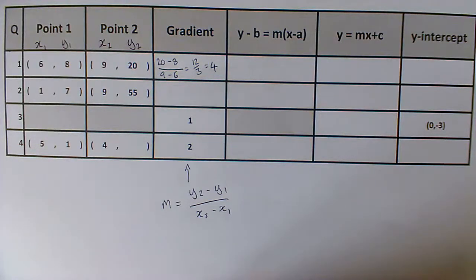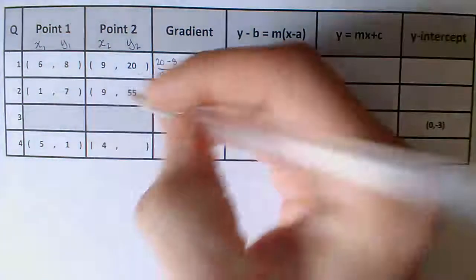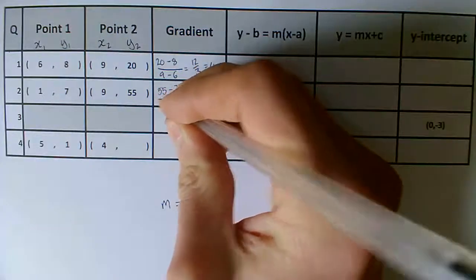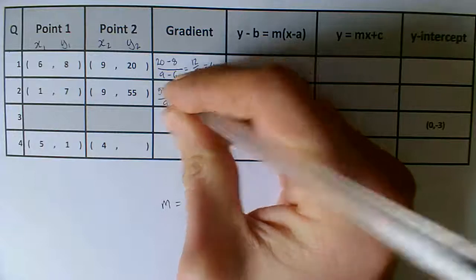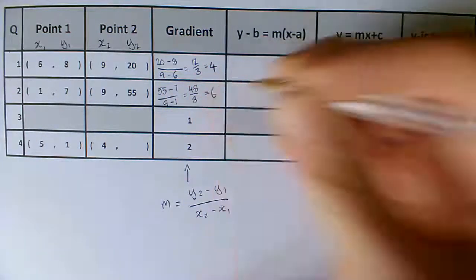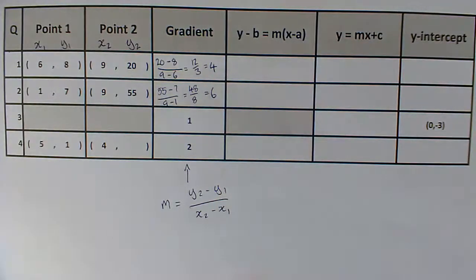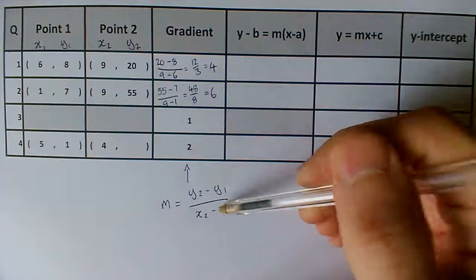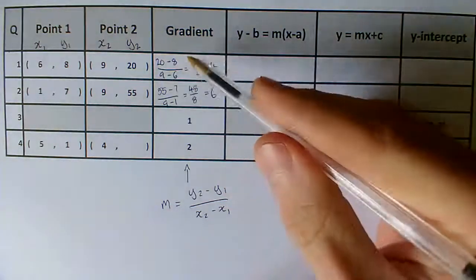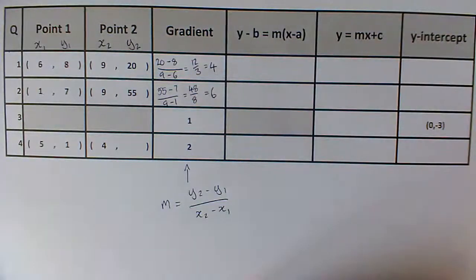Now, that process is what you need to do for each one. You do exactly the same here. 55 take away 7 over 9 take away 1. 55 take away 7 is 48 over 8, and so we get the answer 6. So, for most of the rows of the table that you have to fill in, we are following these nice steps of just putting our numbers in and calculating a gradient. If you want to put that working somewhere else and just put your answers in the table, that might be advisable.